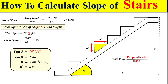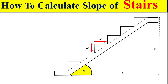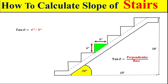Dear students, if this procedure seems lengthy and time-consuming, we also have a second approach. In this case, we take a single step of the stair and use the tangent approach of perpendicular divided by base, where the perpendicular is the riser and the base is the tread. Solving these two terms gives us tan θ = 6/9 = 0.66, and taking the tangent inverse of 0.66 gives us the same angle theta — the slope of the stair.